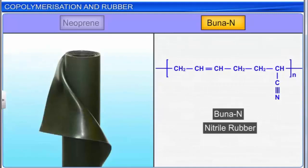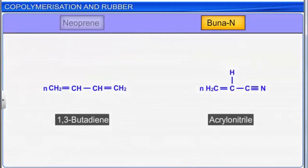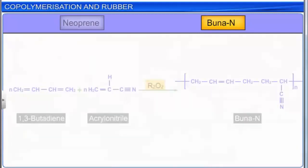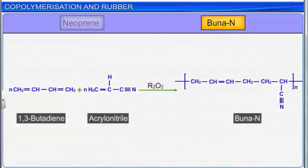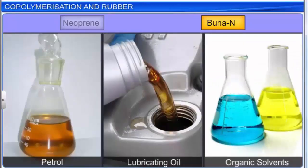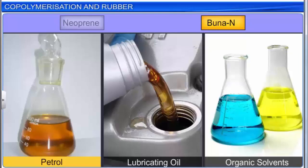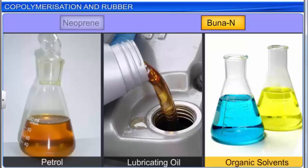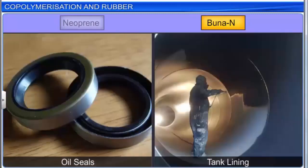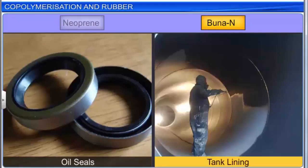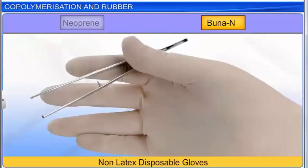Another important synthetic rubber is Buna-N, also known as nitrile rubber. It is a copolymer of 1,3-butadiene and acrylonitrile, requiring a peroxide catalyst. Buna-N is resistant to petrol, lubricating oil, and organic solvents, and can be used over a wide temperature range, making it useful in automobiles. It is used to make oil seals and tank linings. Non-latex disposable gloves are typically made from nitrile.